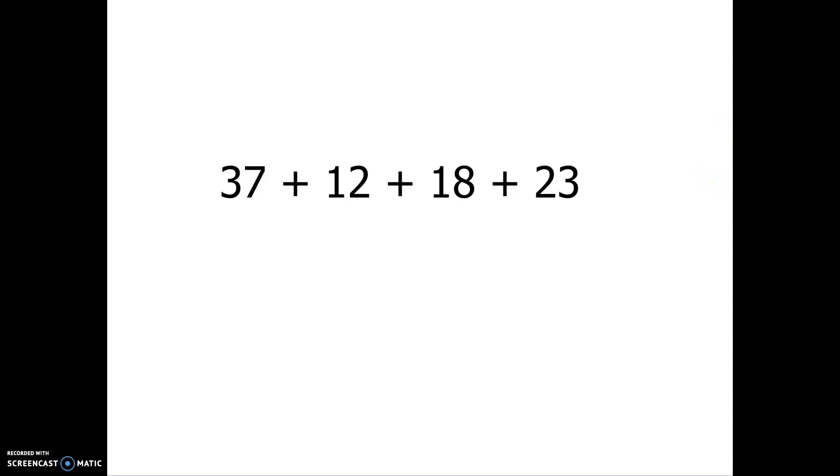So, we've got 37 plus 12 plus 18 plus 23. What can we do to get these larger numbers added together? The last couple days, we've been talking and working on making tens. When we have larger numbers, but we can combine some of the digits so that we can make it ten, it can help us add those numbers together a lot easier.